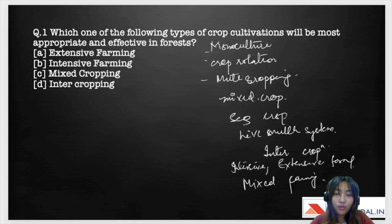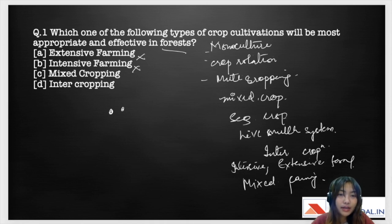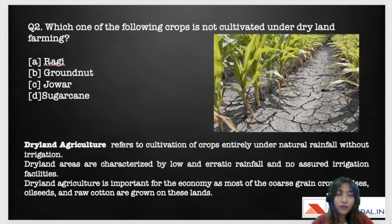Returning to question one: which type of crop cultivation is most appropriate and effective in forests? Extensive farming is not possible, and intensive farming is wrong. Mixed cropping is incorrect because we cannot treat the forest and the main crop equally. However, in intercropping, the forest trees and the main crop can be treated unequally and separately. Therefore, intercropping is the most appropriate and effective system in forests.